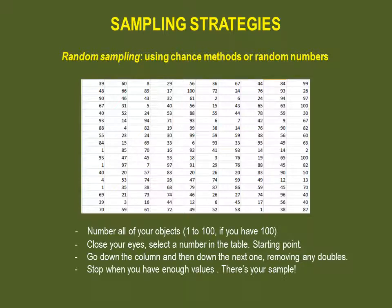Pick a number by closing your eyes and pointing anywhere on the table — that would be your starting number. Here, we have picked 57. For your following numbers, go down the column and then down the next until you have the desired amount. Make sure you discard any doubles or any values that are not included — for example, a value of 102 if you only have 100 subjects. And voilà, there's your random sample.